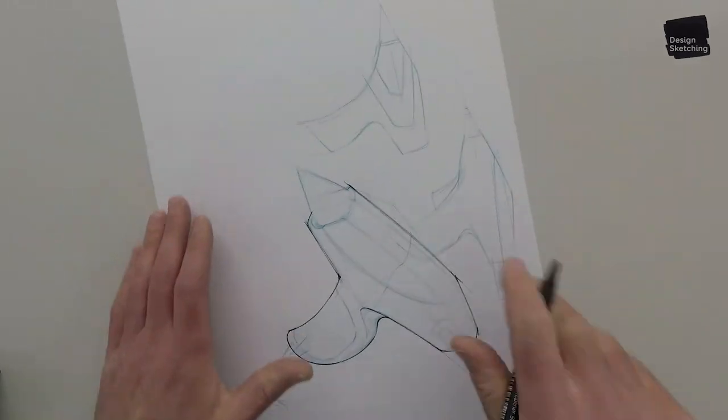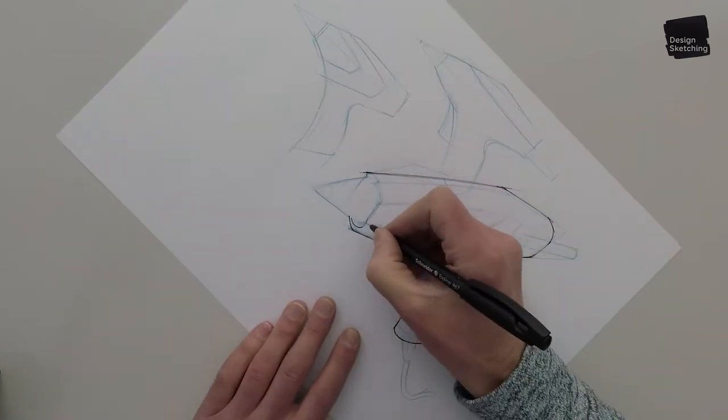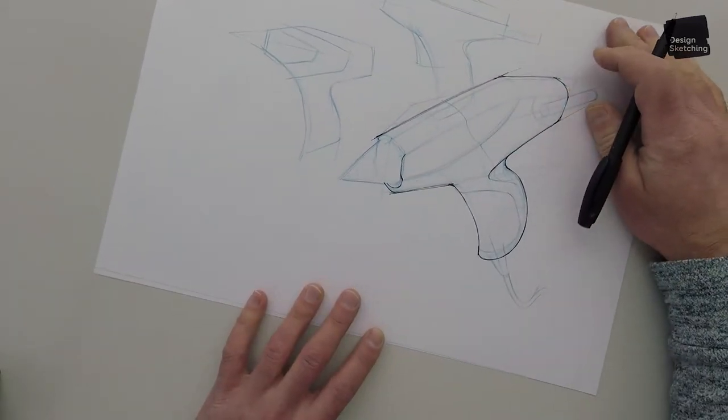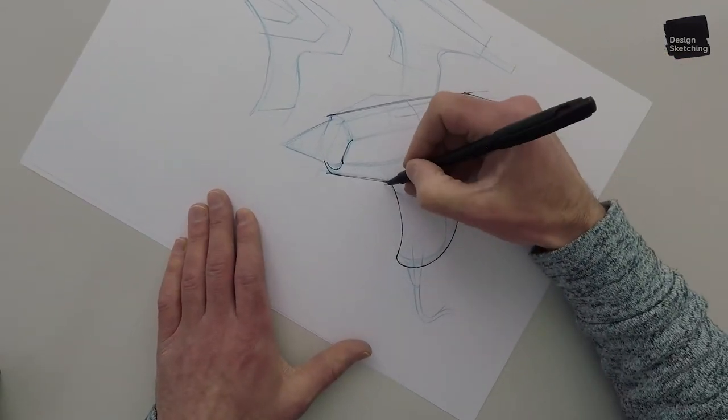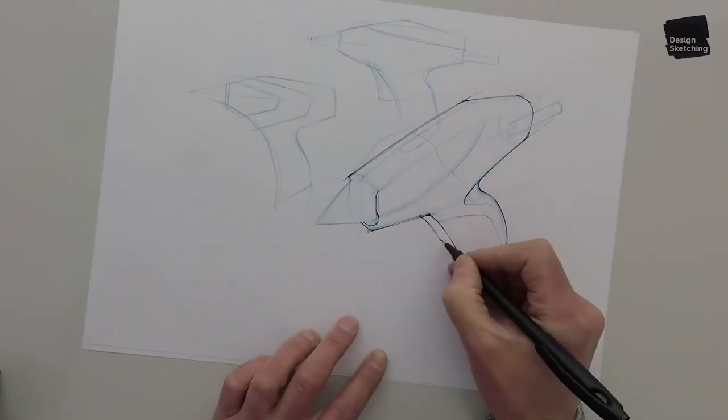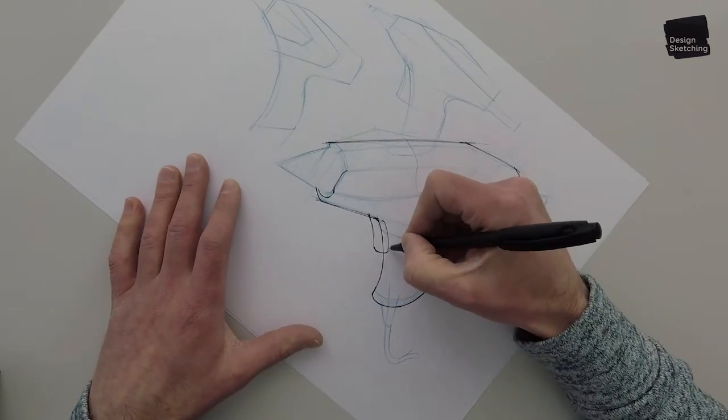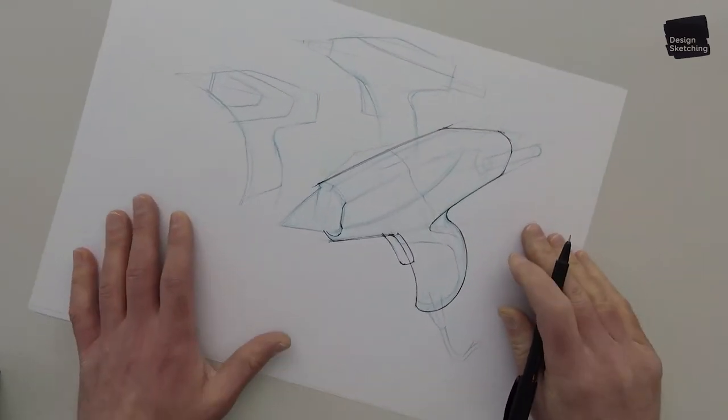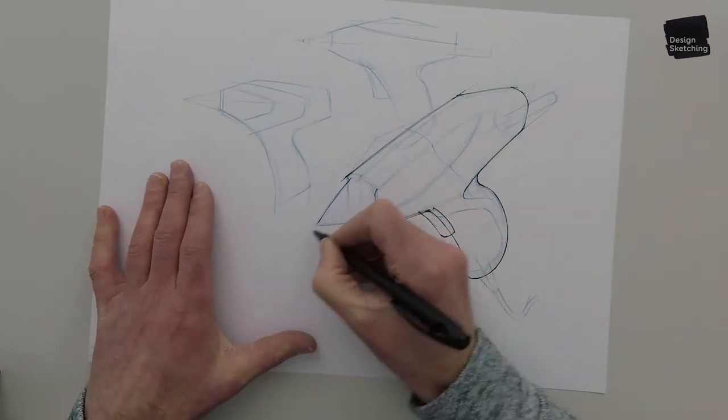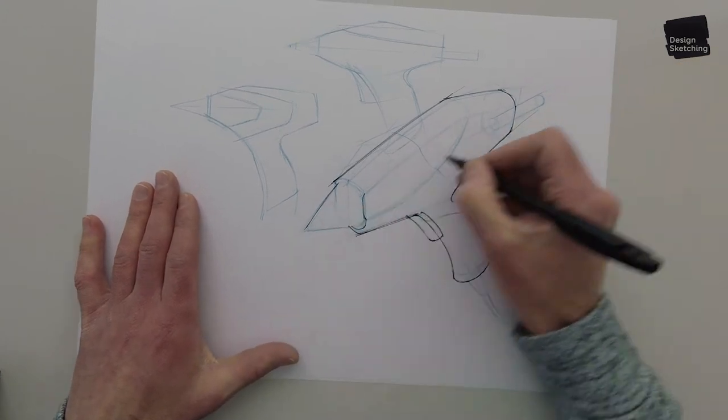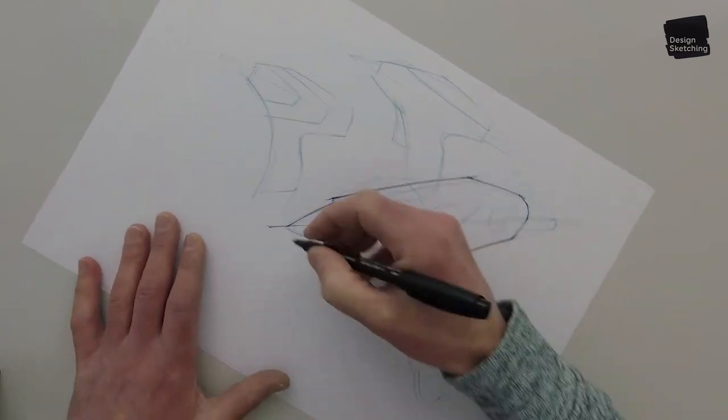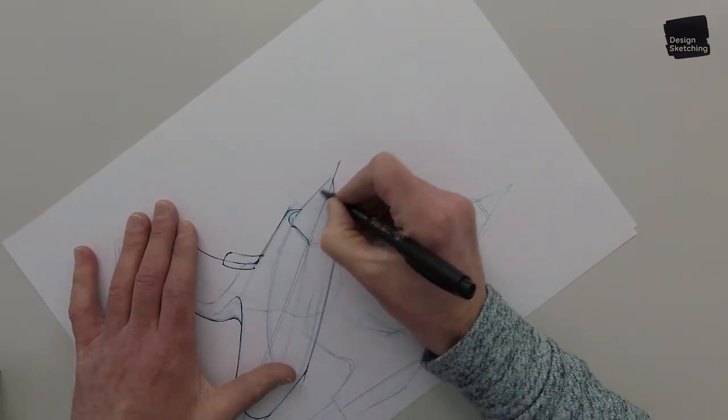I'm just worried about the fluency. That's really the main goal at this point. I think I still need to drop in the trigger here. Okay. Long lines from the shoulder, ghost line in the air. So that your system memorizes where it needs to go. And then put your line on the page.